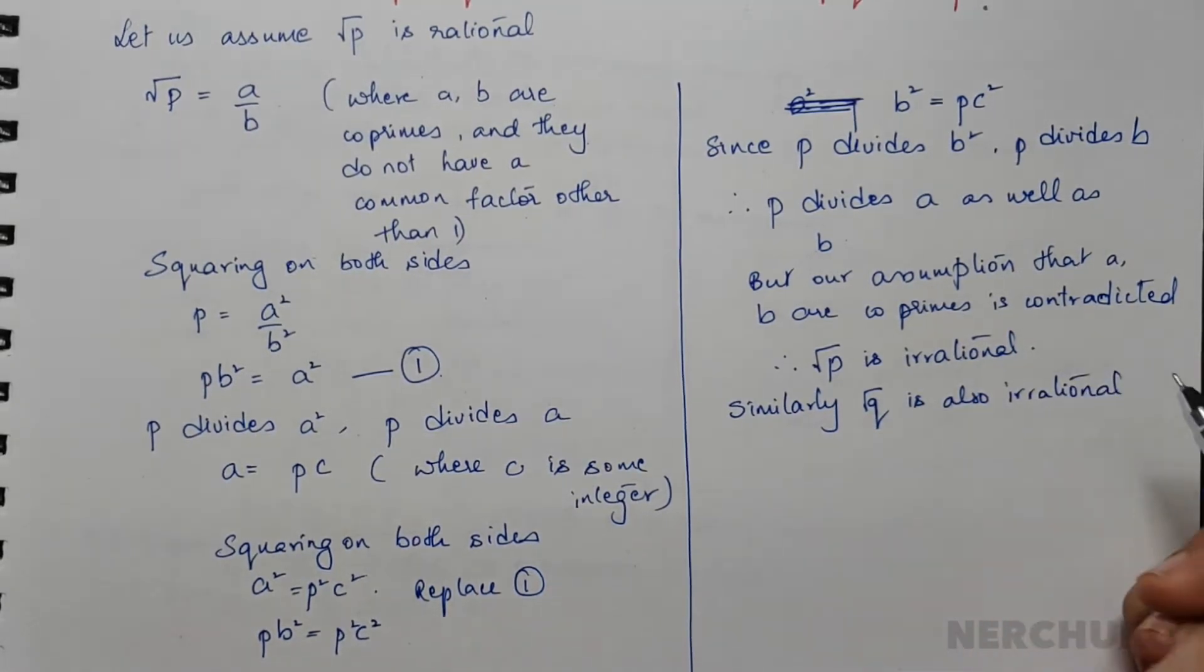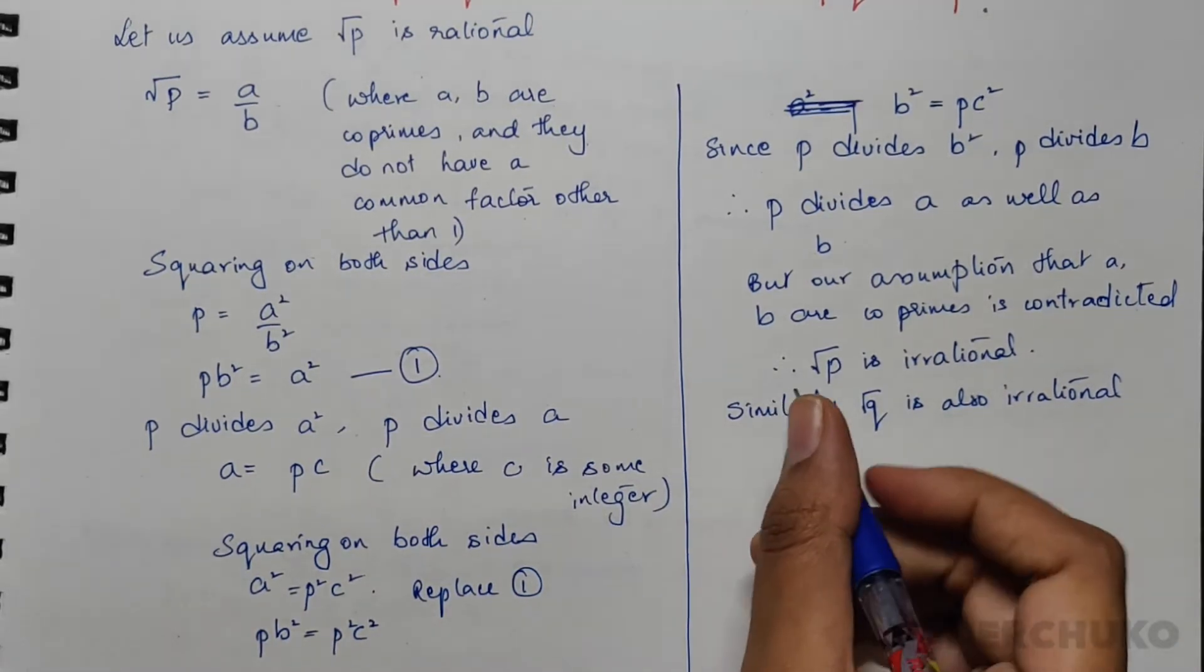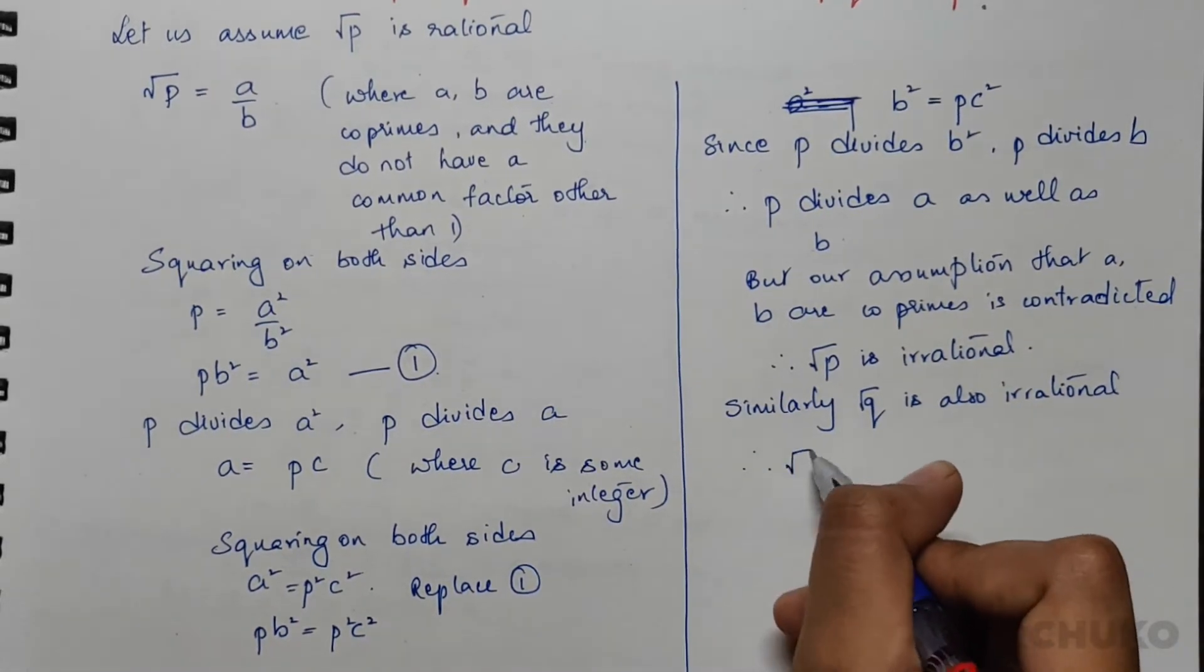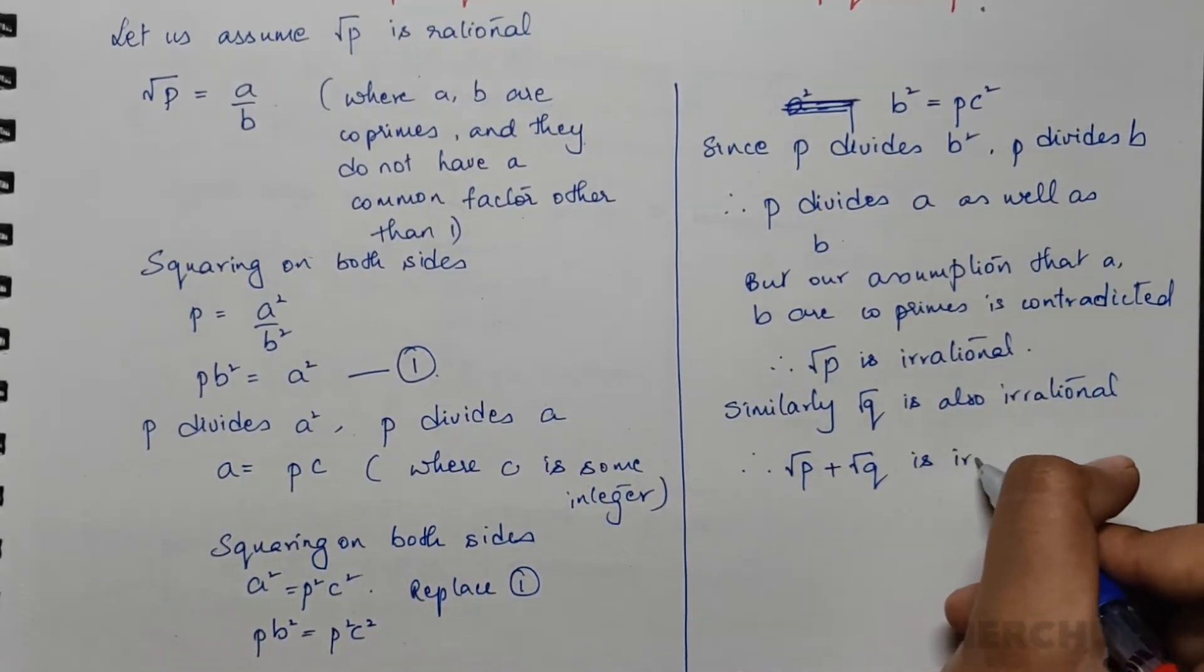Sum of two irrational numbers is also an irrational number. Therefore, root p plus root q is irrational.